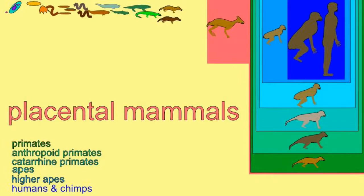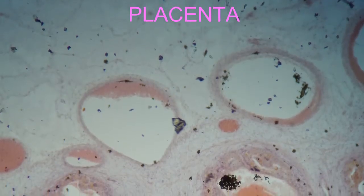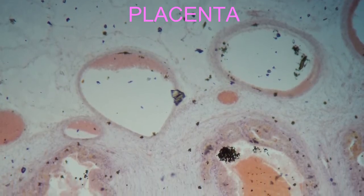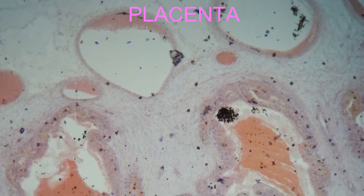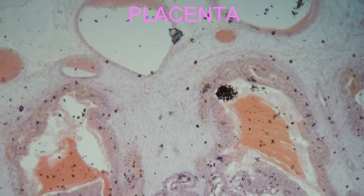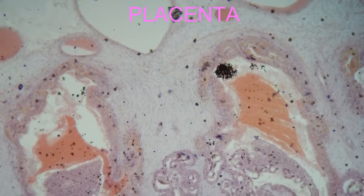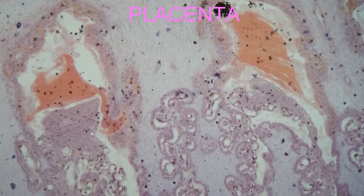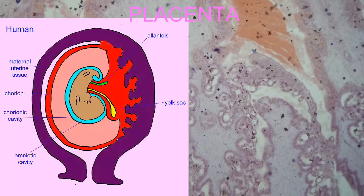What is a placenta? Given that eutherian mammals are typically referred to as placental mammals, it should be obvious. It is when there is blood leaving the endometrium of the uterus, which then bathes the chorion of the fetus.